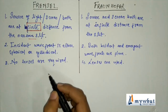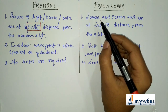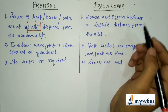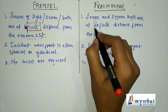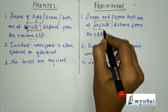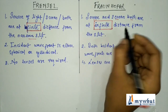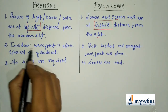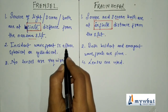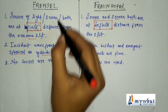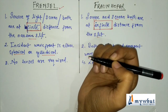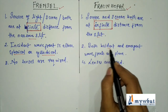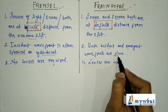In Fraunhofer diffraction, the opposite happens — the source and the screen are both at infinite distance from the slit. Regarding wavefronts: in Fresnel diffraction, the incident wavefront is either spherical or cylindrical. In Fraunhofer diffraction, both the incident and emergent wavefronts are plane wavefronts.